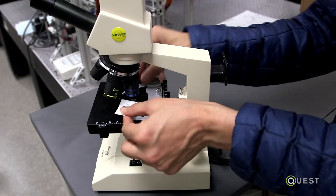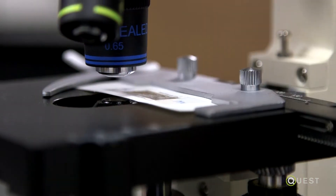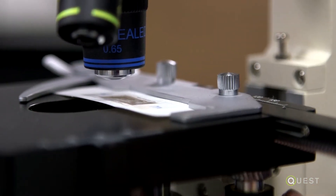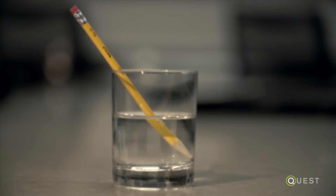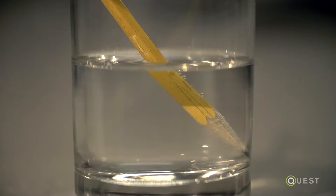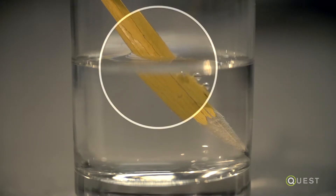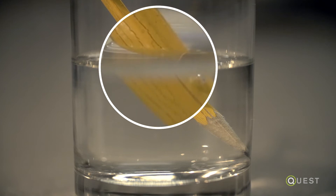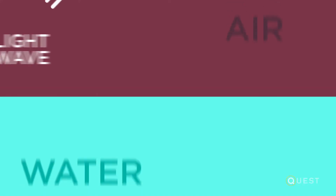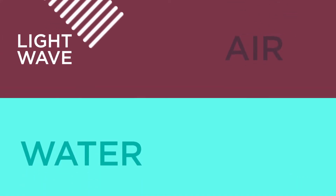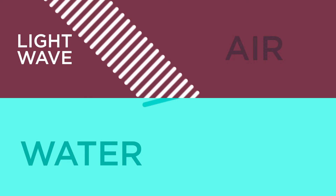The most important thing you need in terms of microscopy is to bend light. If you look in a glass of water and you put a pencil inside, even though the pencil is actually straight, it looks as if it bends at the point where it enters water. This effect happens because as light passes through different media,